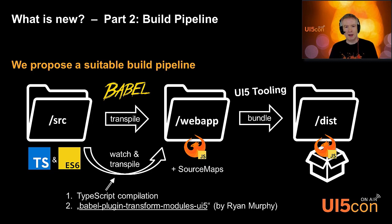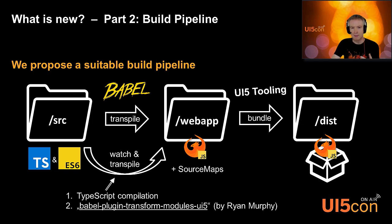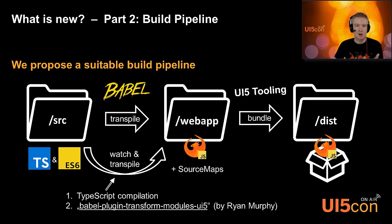On the right-hand side is what you're used to: a webapp folder where you develop controllers, components, and so on, with a bundling step using UI5 tooling into the dist folder. In addition, we'll now have a second build step happening before that. We suggest developing your TypeScript in the source folder and then transpiling to the webapp folder. This is powered by Babel. Two things happen: first, transpilation of TypeScript into regular modern JavaScript; second, transformation of ES modules into traditional UI5 API calls.